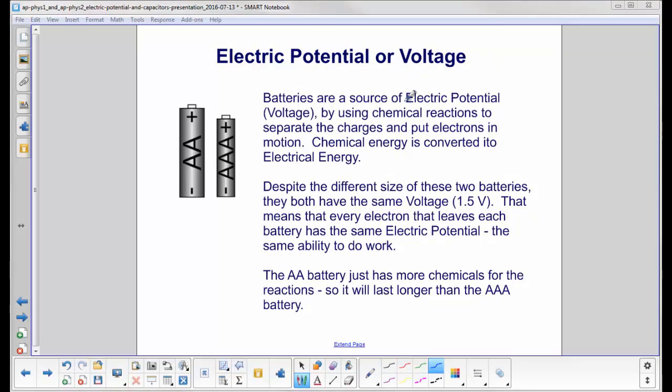Batteries are a source of electric potential. You've always known they had voltage, but now you know the physics behind it. Voltage is really an abbreviation for electric potential. What batteries do is they use chemical reactions to separate charges and put electrons in motion. Chemical energy is converted into electrical energy, and in the unit on circuits we'll talk more about this.